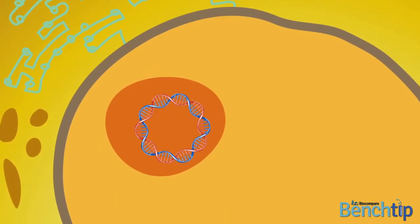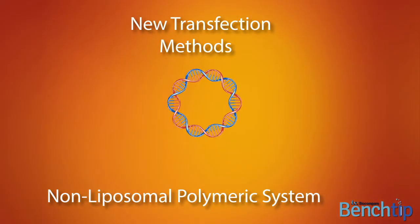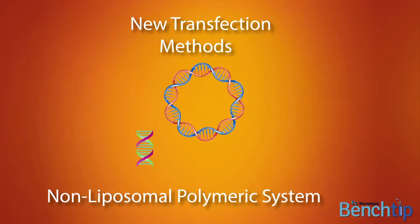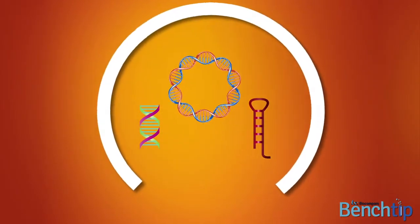In order to address challenging cell types, new transfection methods are emerging based on non-liposomal polymeric systems. These novel polymeric systems can efficiently deliver both DNA and smaller nucleic acids, such as siRNA and microRNA, out of the endosome and into the cytoplasm, overcoming a critical barrier to nucleic acid delivery.